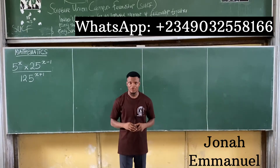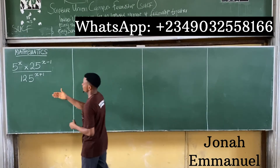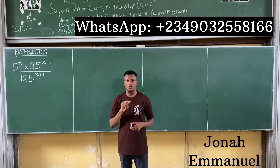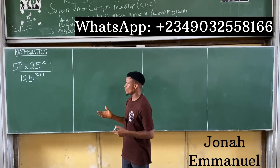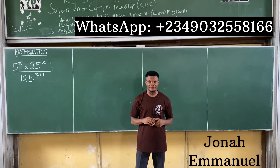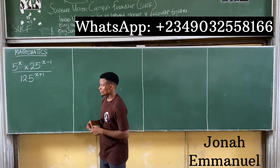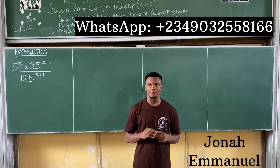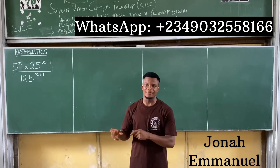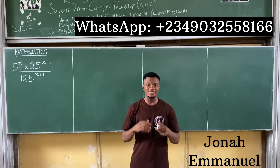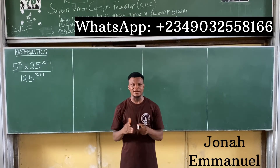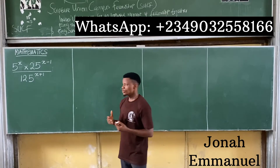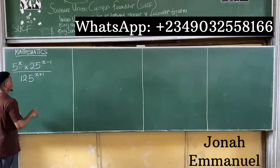Let's take our first example. Given 5 to power x times 25 to power x minus 1, divided by 125 to power x plus 1, we are asked to simplify this. The key idea is to express each term in the same base. Whenever you can express the different terms in the same base, it makes it easier to apply the laws of indices.